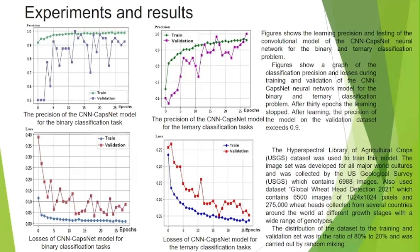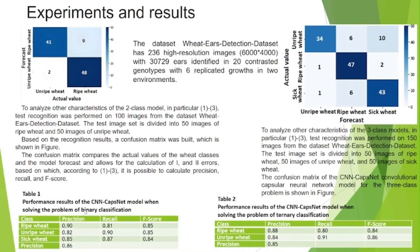One of the main characteristics of the model is adequacy. The adequacy of the artificial neural network model can be assessed by the following features: the deviation of precision and losses on the training and validation dataset of images when training the model is not very significant and does not exceed 1.2% on average. The precision and loss functions on the validation image datasets do not fluctuate very much. The precision function of the validation image dataset tends to increase. Based on the classification results, a confusion matrix was built, which is shown in the figure.